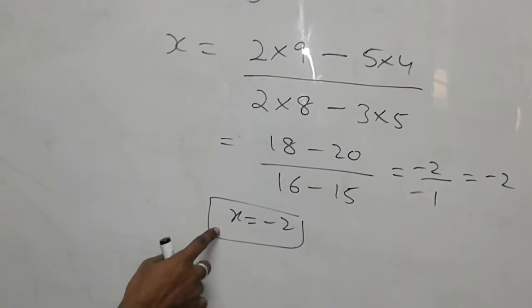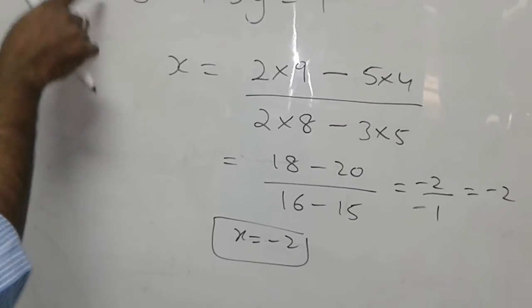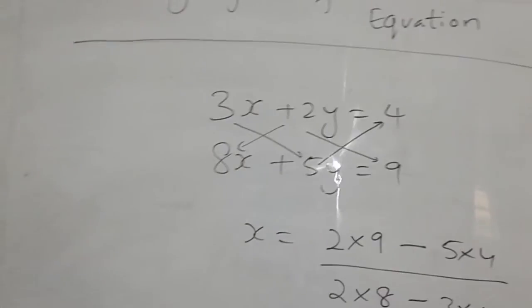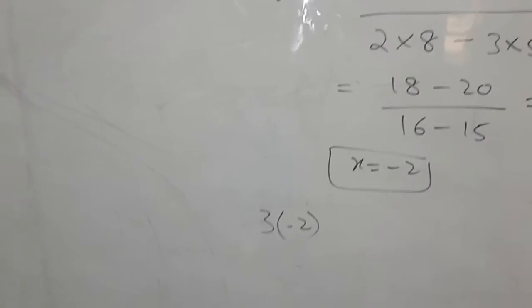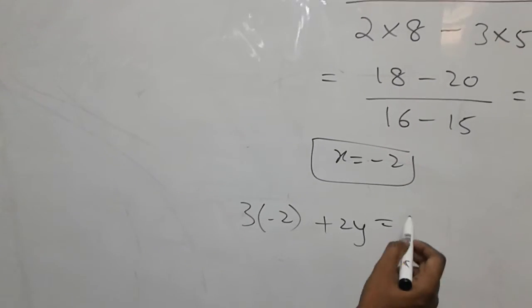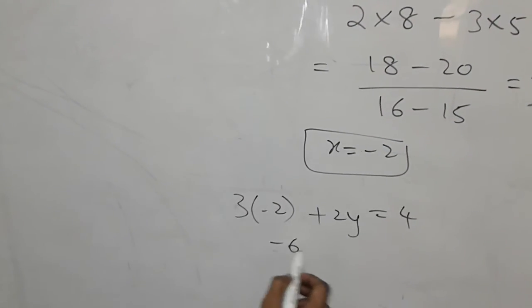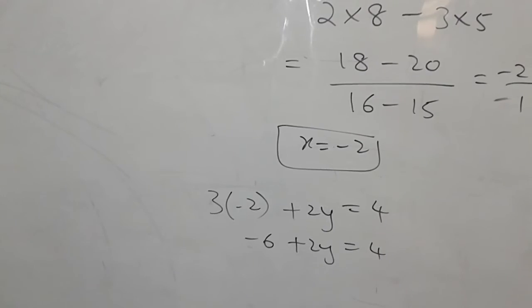Now this value I am going to put it in either of these equations. If I put it in the first, I have 3 times minus 2 plus 2y equals to 4. Minus 6 plus 2y equals to 4.